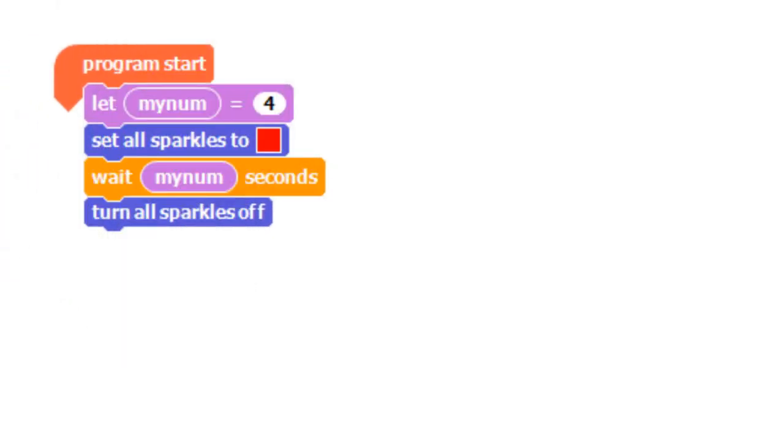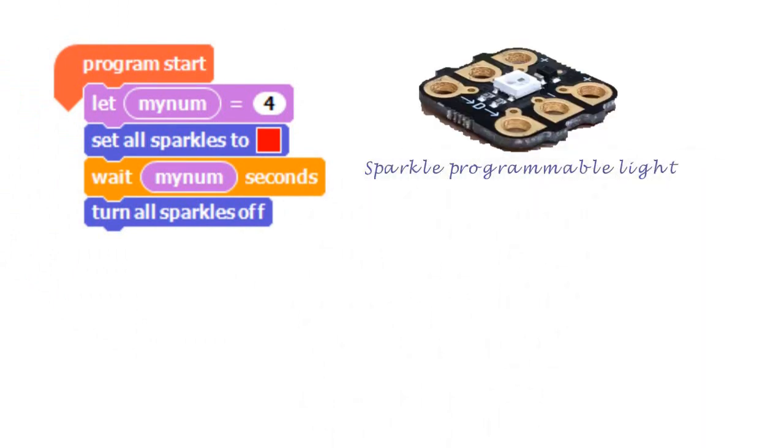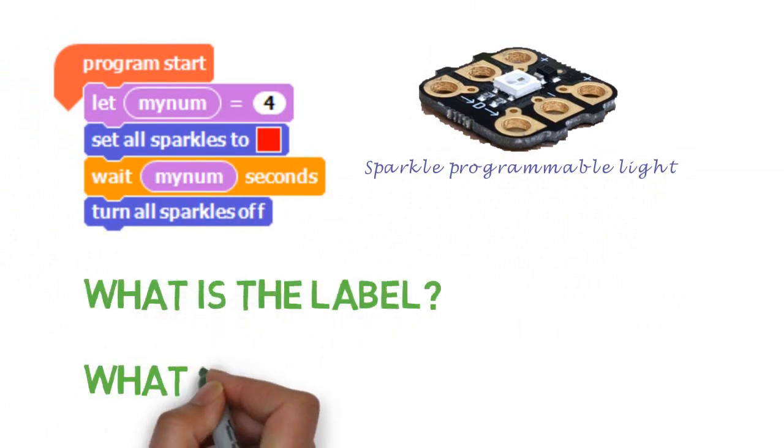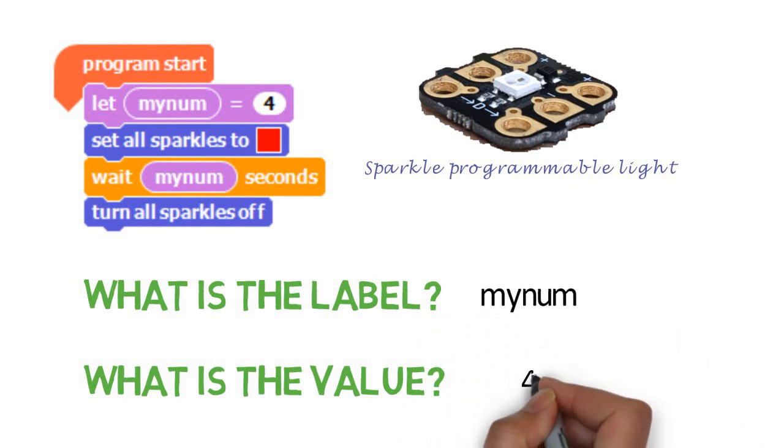Let us now look at a crumble example. The variable blocks in crumble are pink. It uses let instead of set but it does the same job of assigning a value to the variable. Write on your whiteboard what is the label and what is the value in this example. Well done, my num is the label and four is the value.